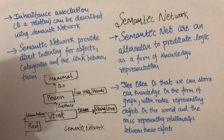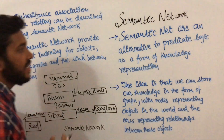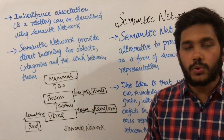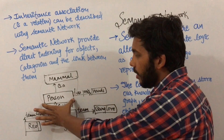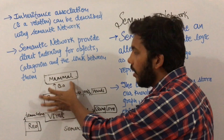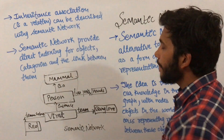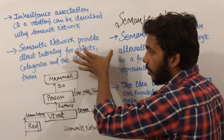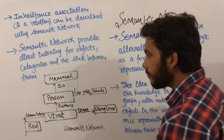Representing inheritance in predicate logic was complex, but representing an is-a relationship in a semantic network is quite easy. We can represent one object like 'person' and with the help of the 'is-a' relationship we can represent the inheritance association. Semantic networks provide direct indexing for objects, categories, and the links between them.